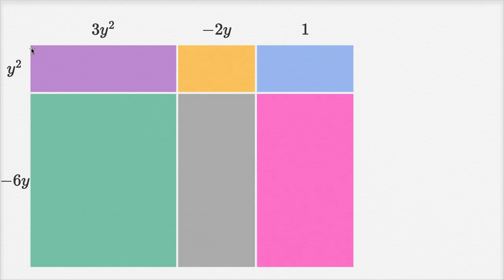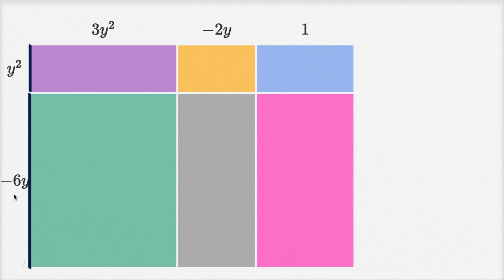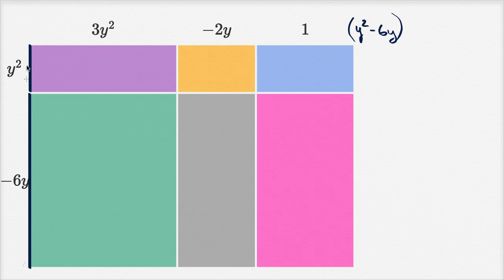So what's its height? Well, from here to here, that distance is going to be y squared, and then from there to there, that distance is going to be negative 6y. Even negative 6y can be positive if y is negative, so it's completely reasonable to say this distance could be negative 6y. So the entire height is going to be y squared plus negative 6y, which is the same thing as y squared minus 6y.